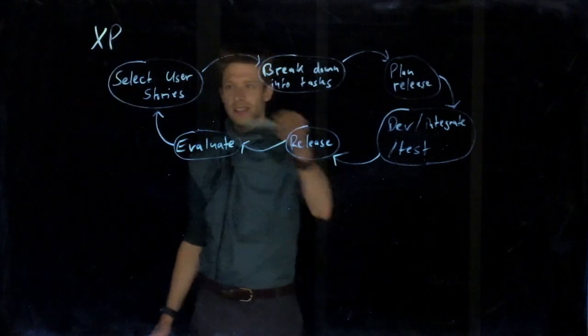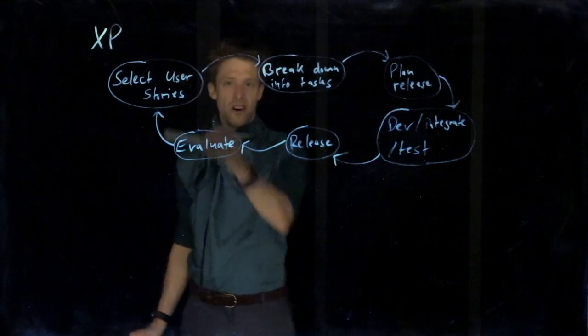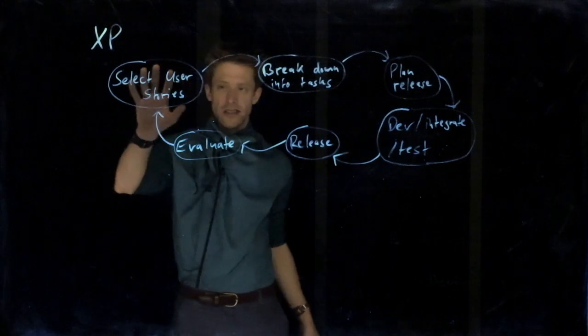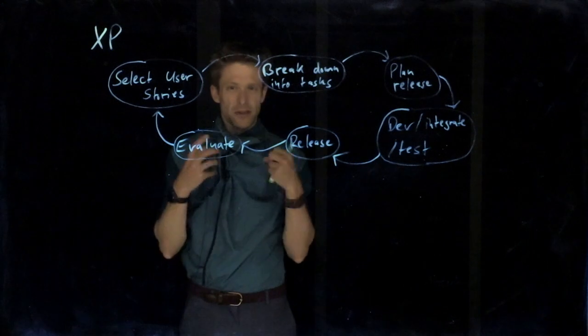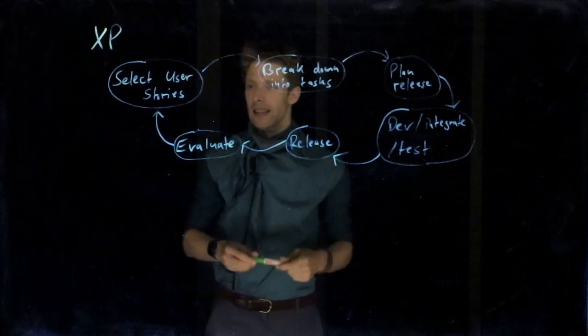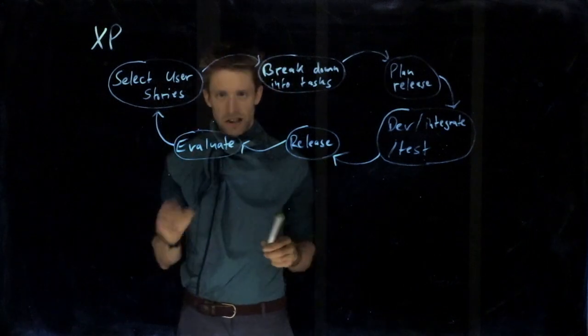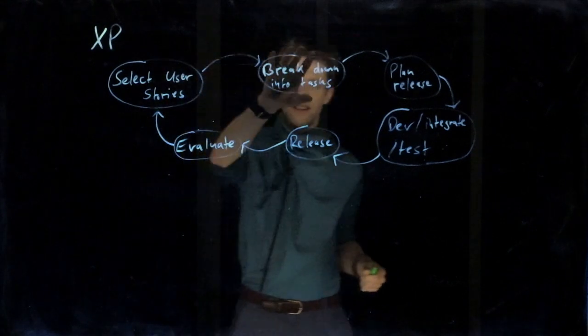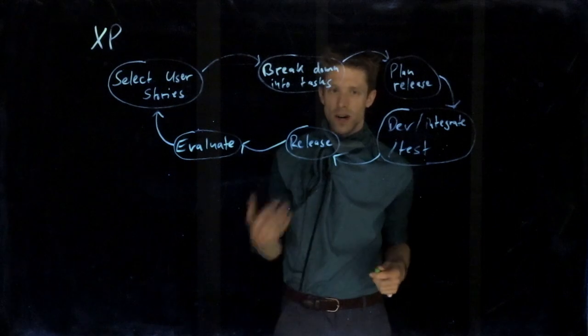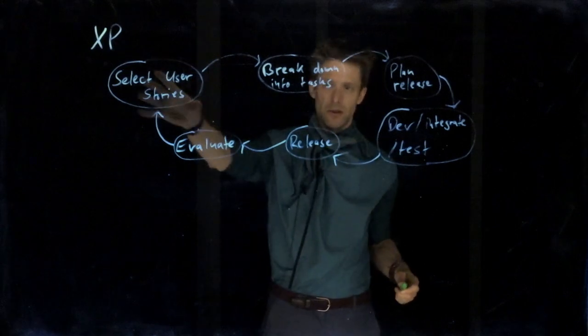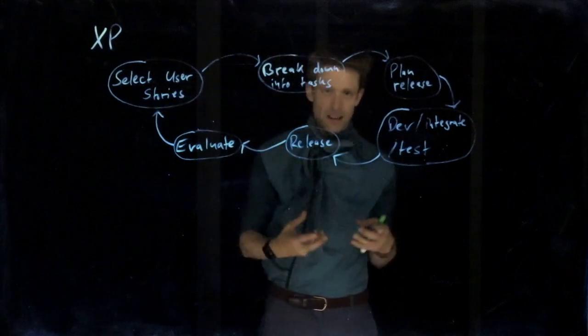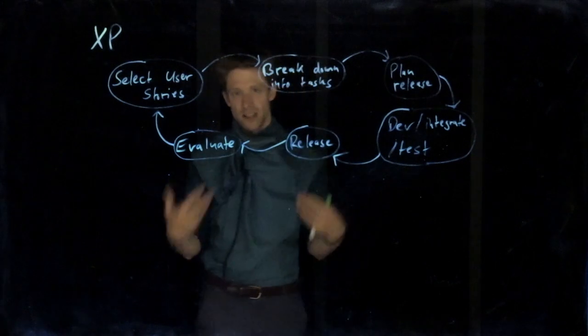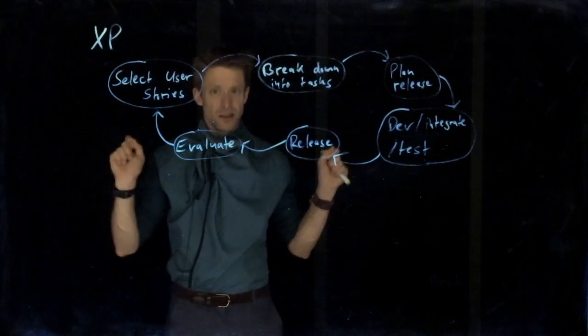Extreme Programming is this kind of endless loop of activities in which you select a number of user stories, which are kind of small requirements but they have a very specific user attached to them. And we'll get back to that. Then these are broken down into tasks, so it's kind of a high level requirement broken down into technical tasks that a developer can actually do and that can be distributed to different developers.